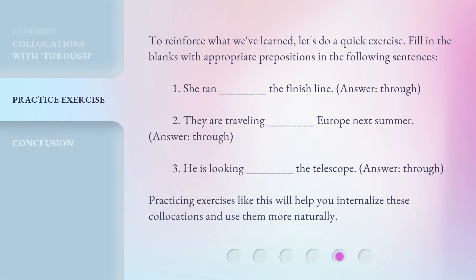To reinforce what we've learned, let's do a quick exercise. Fill in the blanks with appropriate prepositions in the following sentences. 1. She ran blank the finish line. Answer: Through. 2. They are traveling blank Europe next summer. Answer: Through.